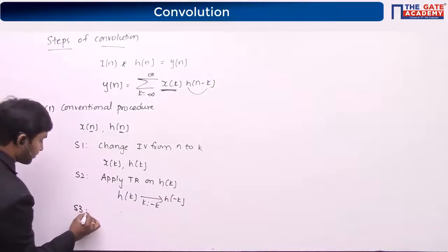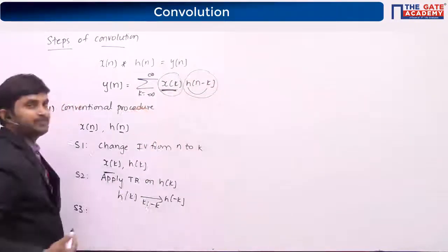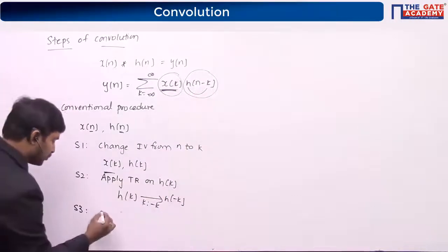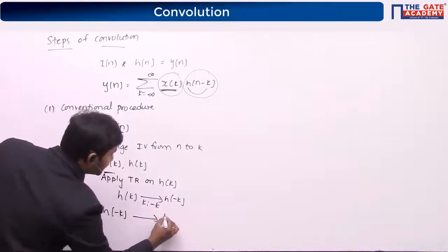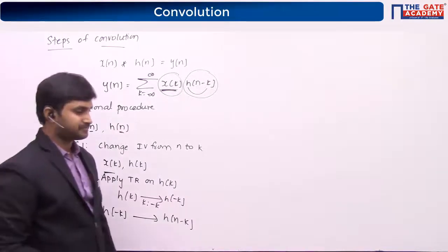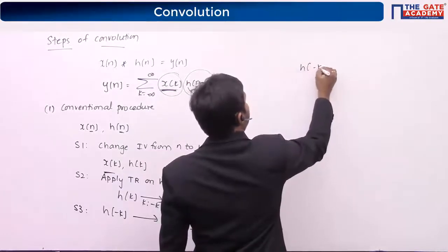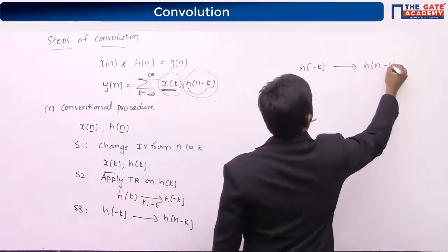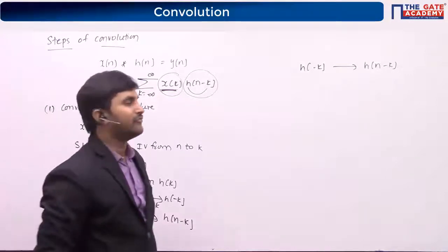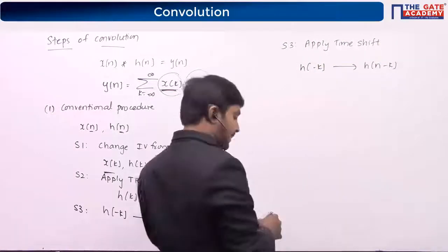Third step: I have x of k and I want h of n minus k. So from h of minus k, I want to get h of n minus k. What operation do I have to apply? From h of minus k, if I want h of n minus k, the answer is time shifting. So step 3 is to apply the time shift. When you apply the time shift, you are getting h of n minus k.